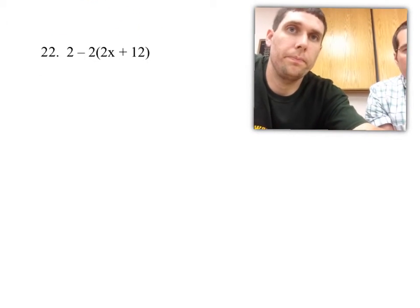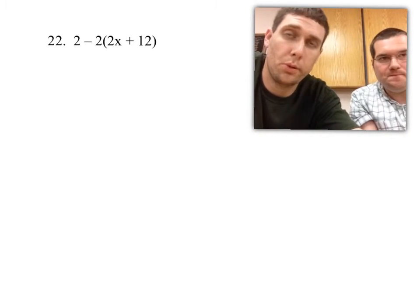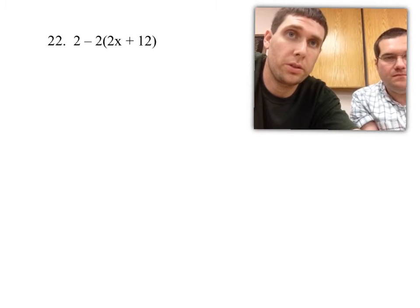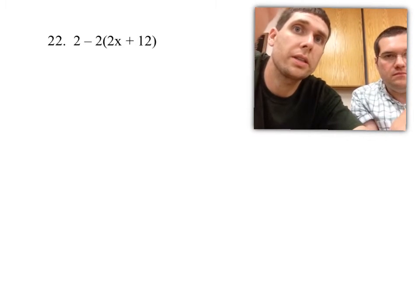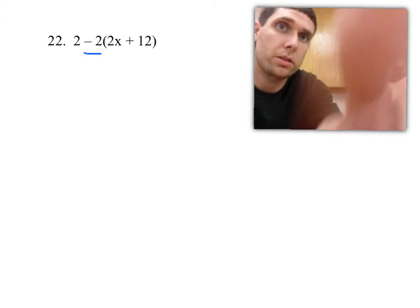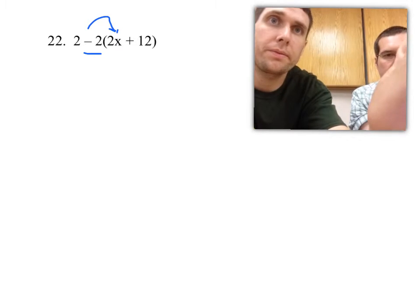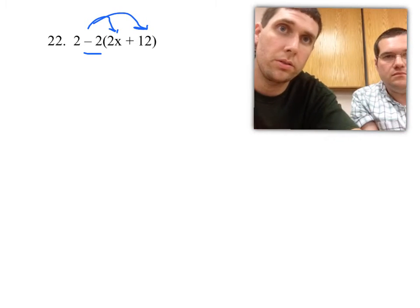And then number 22, we're really going to combine the two steps or processes that we just did. Notice there are parentheses. We always take care of those first. And the number sitting out in front of the parentheses is a negative 2. So I need to take my negative 2 and times it by both of these numbers in the parentheses. That's the first thing I want to do, distribute.